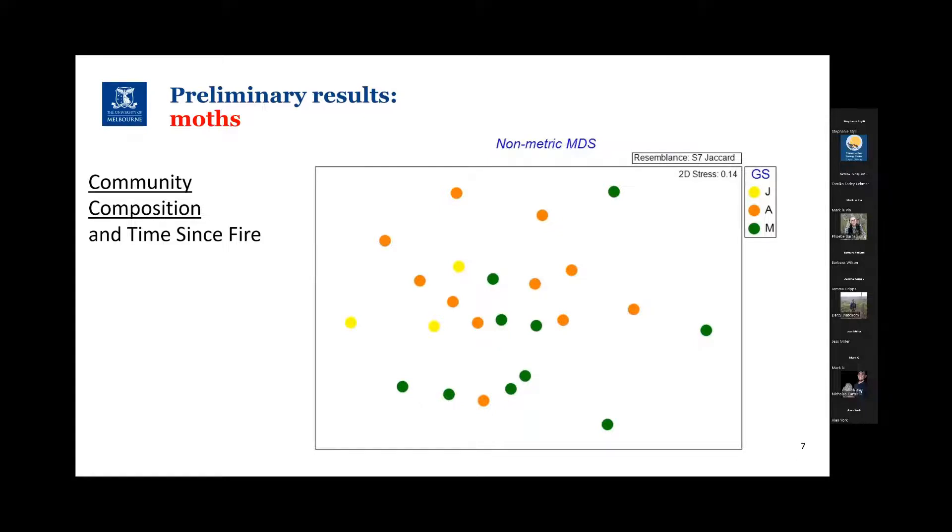Sites that are close together are very similar in composition. Sites that are a long way apart are quite different. The first obvious take-home message is that there's a lot of overlap between the growth stages with regards to species composition, but there are some very subtle trends.